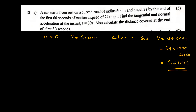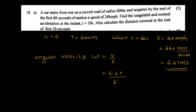Now we find the angular velocity. The final angular velocity omega is equal to V divided by R: 6.67 divided by 600, which equals 0.01116 radians per second.